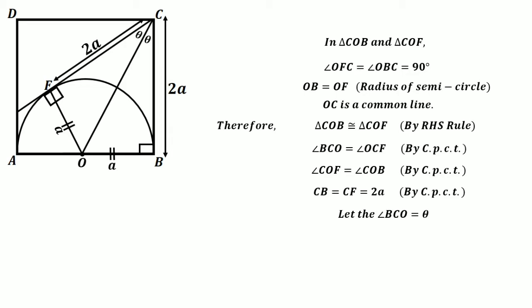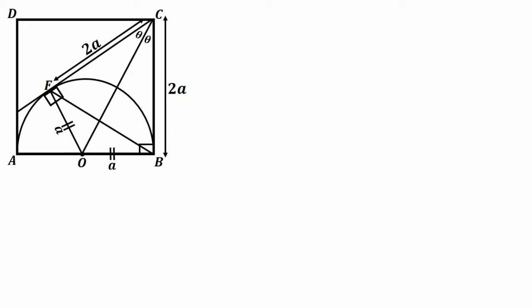Now join the line F and B, and let the point of intersection between line FB and CO be O'.